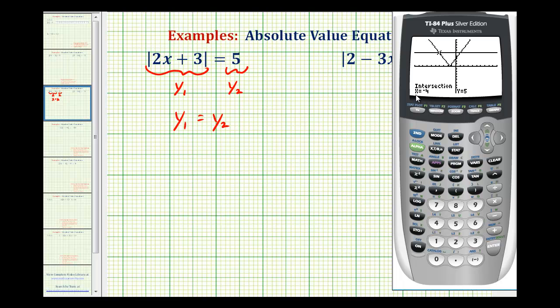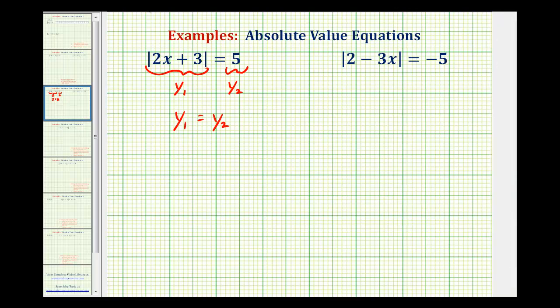And notice how it's telling us the x-coordinate of this point of intersection is x equals negative 4, which is one of our solutions. We'll go ahead and write that down, and now we'll go back and find the second solution.